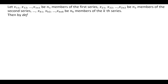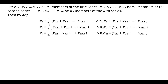Let x11, x12, ..., x1n1 be n1 members of the first series; x21, x22, ..., x2n2 be n2 members of the second series; and xk1, xk2, ..., xknk be nk members of the kth series. By definition, x̄1 = (1/n1)(x11 + x12 + ... + x1n1), which reduces to n1 x̄1 = x11 + x12 + ... + x1n1. Similarly we get n2 x̄2 and nk x̄k.